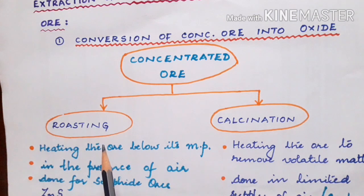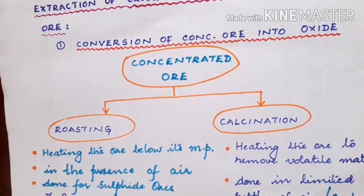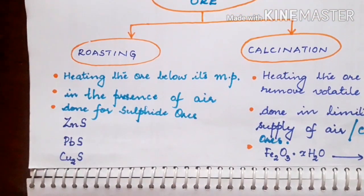Suppose we are having ores like sulfide ores. Sulfide ores don't contain any oxygen in it. So such compounds are to be heated in the presence of air well below its melting point. On heating in the presence of air, it will be converted to its corresponding oxide. This is mainly done for sulfide ores.